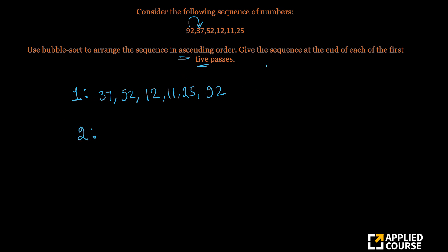What happens at the end of second pass? So 92 is already here, we won't touch this. Again, we'll swap, we'll not swap this because 52 is larger. So this we will swap, 52 is the second largest. Again swap, 52 was here, 12 was here. So 37, 12, 11, 25, 52 and 92 at the end of second swap.